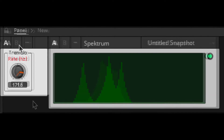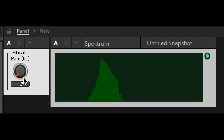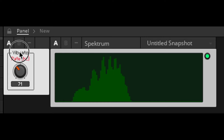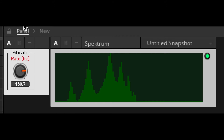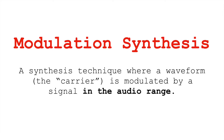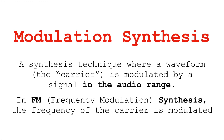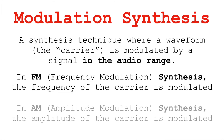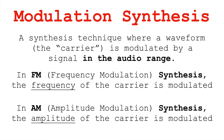Let's try the same thing with vibrato. If we look at these waveforms in spectra, we can see that we're actually creating new frequencies. What's happening here is called modulation synthesis — a synthesis technique where a waveform, which we call the carrier, is modulated by a signal in the audio range. In FM synthesis, the frequency of the carrier is modulated, and in AM synthesis, the amplitude of that carrier is modulated.